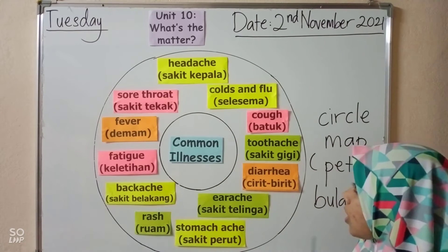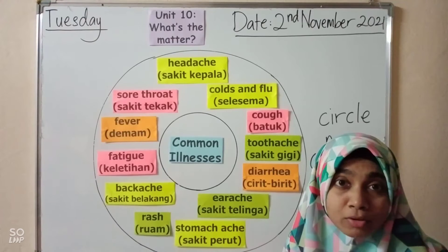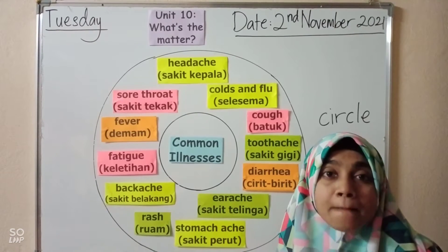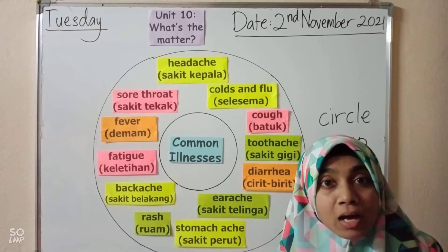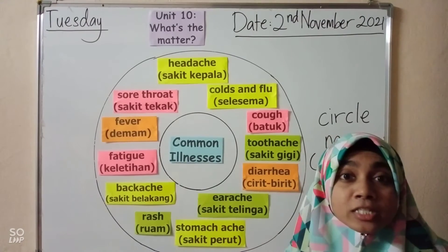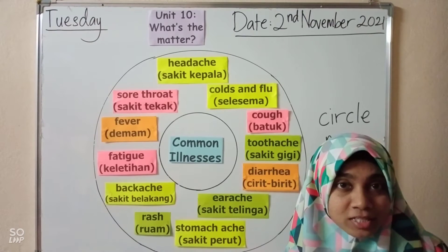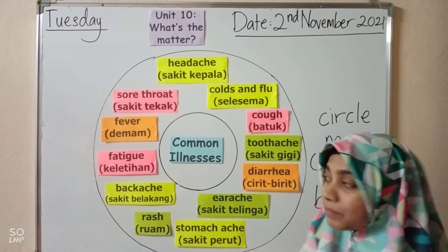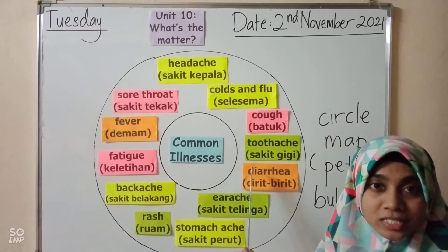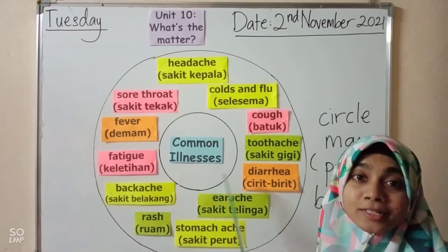First of all, we are going to enrich our vocabulary — menambah kuasa kata — berkenaan tentang jenis-jenis penyakit yang biasa dihidapi. Common illnesses.